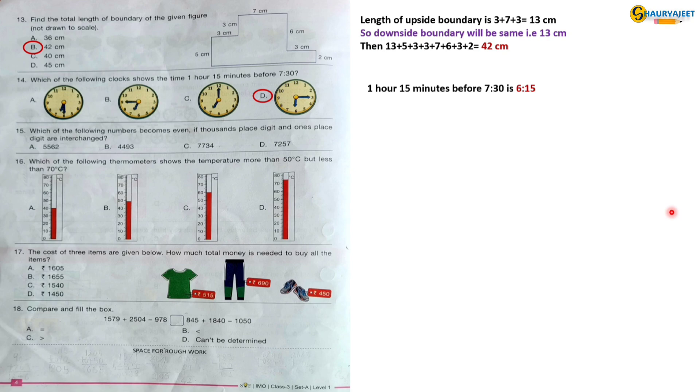Question 15: Which of the following numbers become even if 1000 place digit and 1 place digit are interchanged? If we interchange 1000 place digit and 1 place digit of number 4493, then final number will be 3494 which is even. So the correct option is option B, 4493.